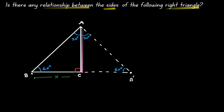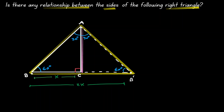Remembering that BC we decided to call x, then we can say that the length from B to B' is double that — that would be 2x, since BC is congruent to CB'. Notice that triangle AB B' we can classify as an equilateral triangle. Angle B' is 60, angle B' is 60, and note that angle A is 30 plus 30, which is also 60. And because this is an equilateral triangle, the length of AB' is also 2x.